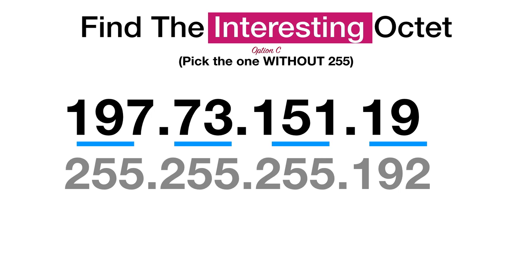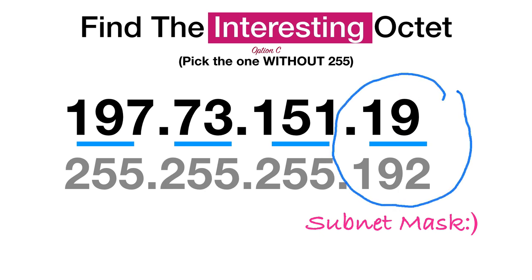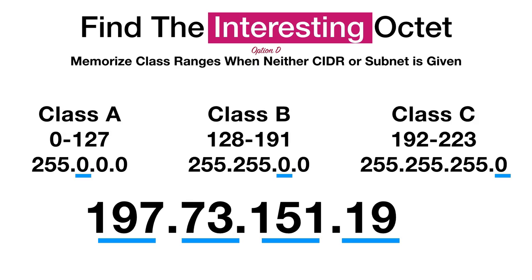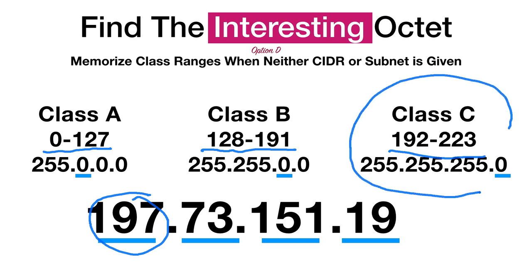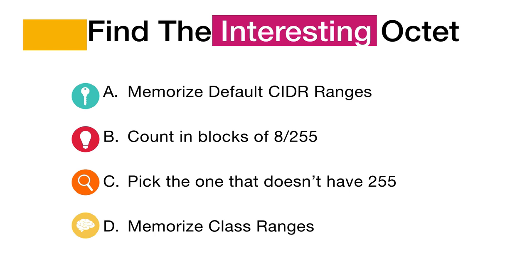Another way: if you're given the subnet mask instead of the CIDR, simply pick the octet that doesn't have 255. That would be the one ending in 192 — way easy. Lastly, you can memorize the class address ranges. Class A is 0–127, Class B is 128–191, and Class C is 192–223. You just look at the first octet — here it's 197, which falls in the Class C range, so the fourth octet is the interesting octet.